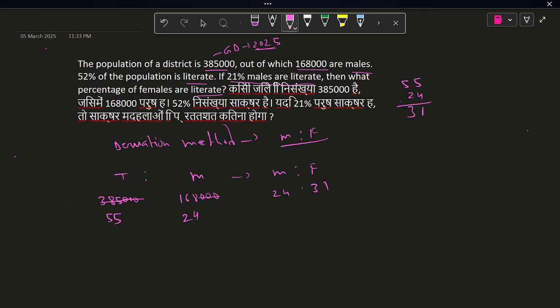So what is the deviation method? I think you know that. So here by applying the deviation method, 52% of the population is literate, 52%, and 21% is male.